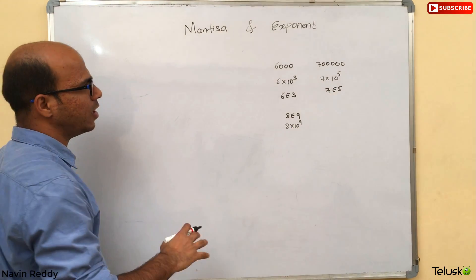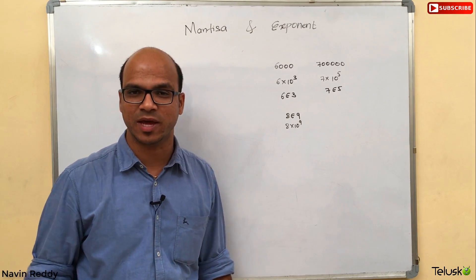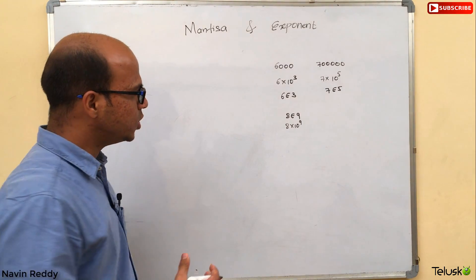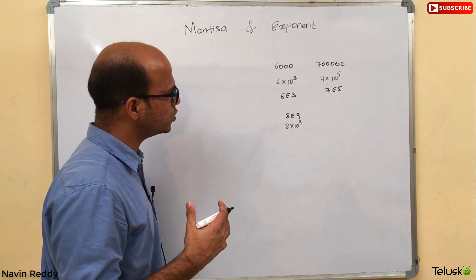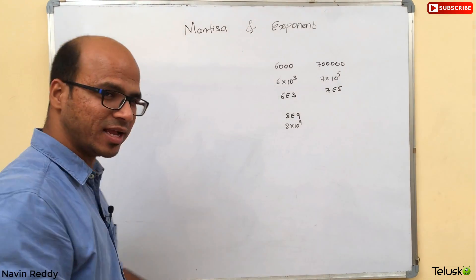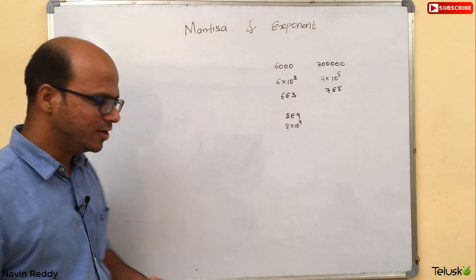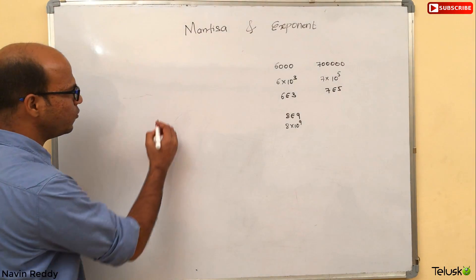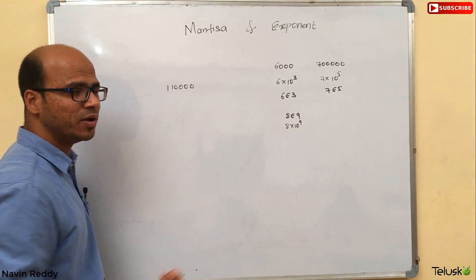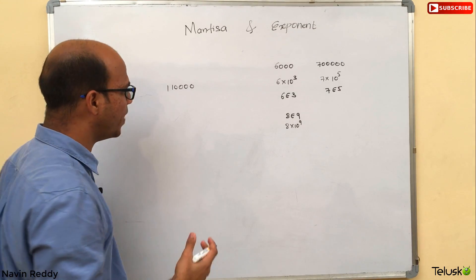But we are not looking at this in the decimal system — we want to talk about the binary system. How can you represent a number in binary format? So if you have a binary number like 11000 or 11 followed by three zeros, how can you represent this in binary format?